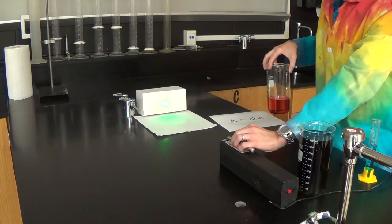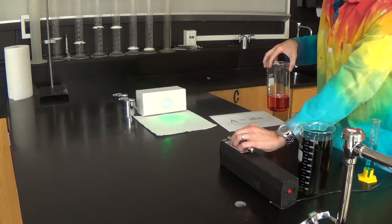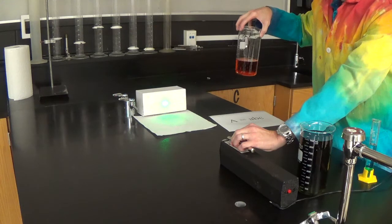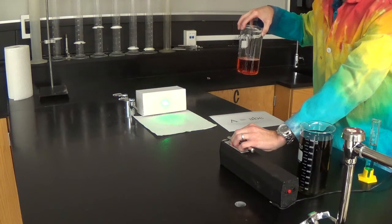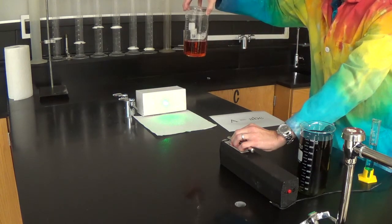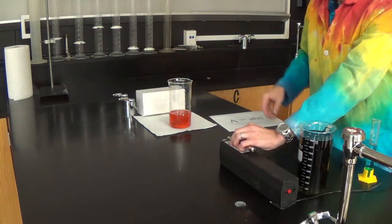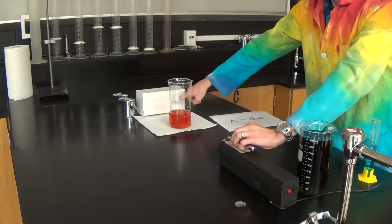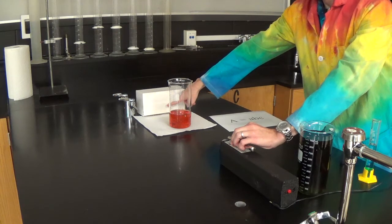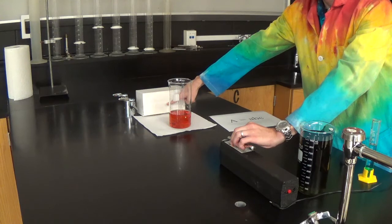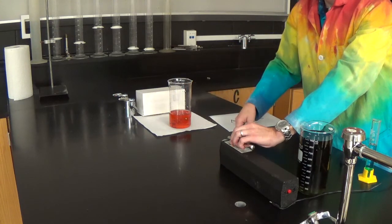So what if we switch our colorimeter to a green color? What would you predict that red will do with a green color? So before and after. There is a small amount of transmittance there. Why? Red does absorb green light.